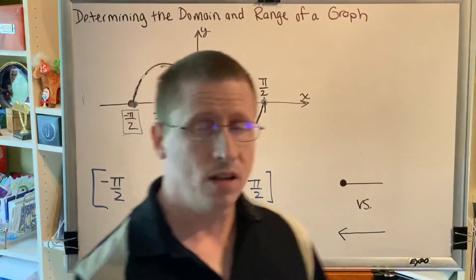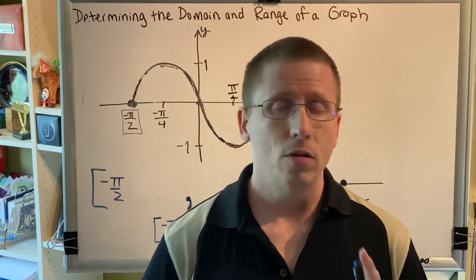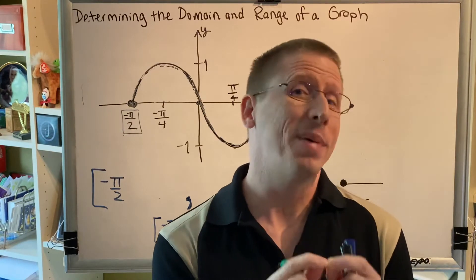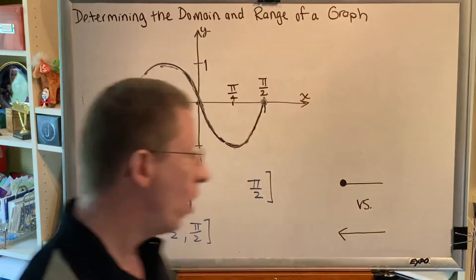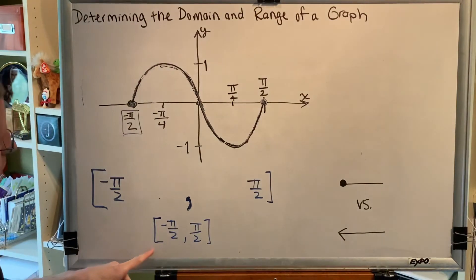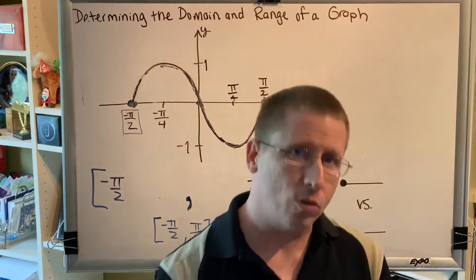If domain is a collection of x's, which means we're measuring left and right, then range must be a collection of y's, which means we're measuring up and down. And because we know our final answer is going to be expressed as an interval, we need to do the smallest first, which would be the down. So we're going to go from the down to the up.